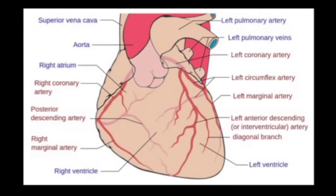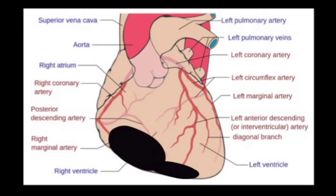What happens if we occlude the right coronary artery more proximally? This will cause an infarct of the inferior wall as well as the right ventricular wall.